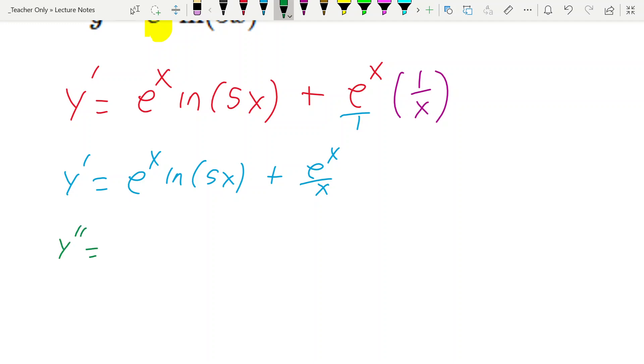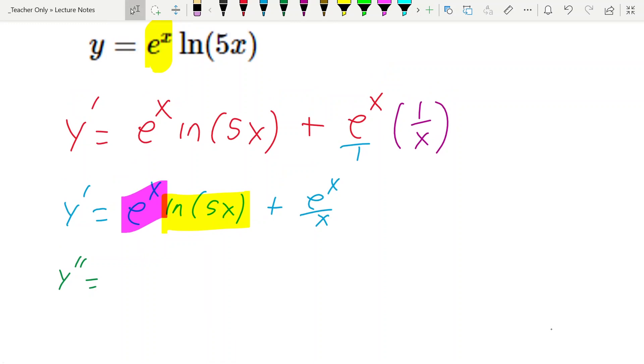The second derivative now would be, well, notice we have our first, this derivative, once again, is another product rule. And in fact, it happens to be the exact same product rule that we started with. So this is going to result in the line we're working from. So the derivative of e to the x is e to the x, leave the natural log of 5x alone, plus, now leave the e to the x alone, that factor. The derivative of natural log, we already know, is 1 over 5x times the derivative of the argument, which would be 5. And these 5s would divide, resulting in 1 over x.